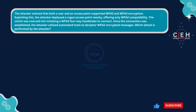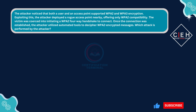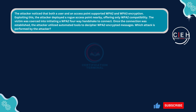Next question. The attacker noticed that both a user and an access point supported WPA2 and WPA3 encryption. Exploiting this, the attacker deployed a rogue access point nearby, offering only WPA2 compatibility. The victim was coerced into initiating a WPA2 four-way handshake to connect. Once the connection was established, the attacker utilized automated tools to decipher WPA2 encrypted messages. Which attack is performed by the attacker?